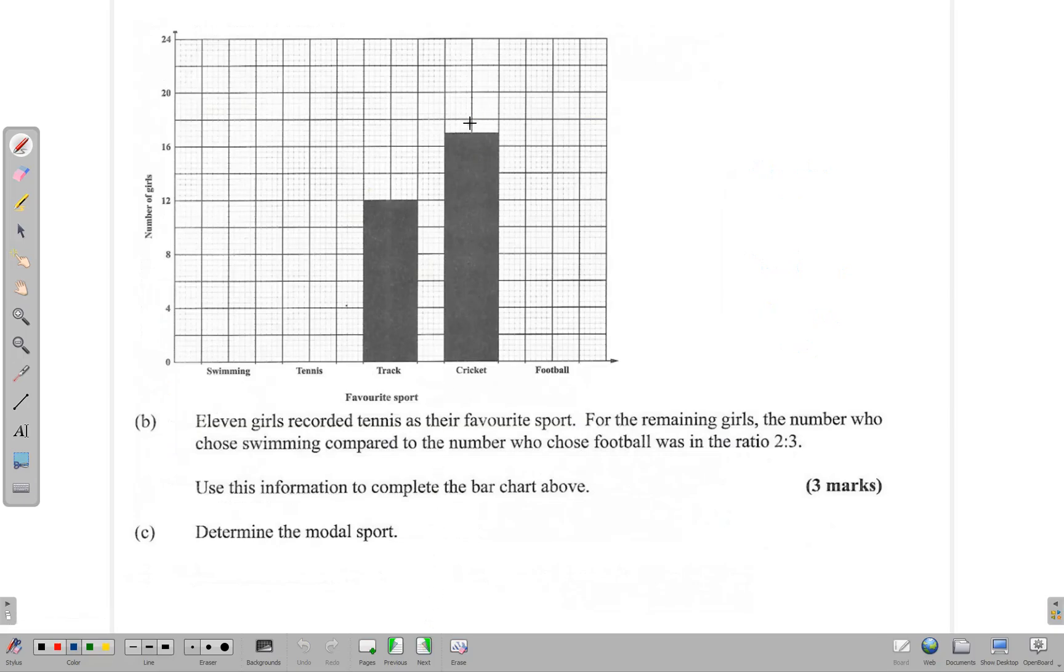11 girls recorded tennis as their favorite sport. So far we have 17 and 12, and now 11. That gives us 40 girls.